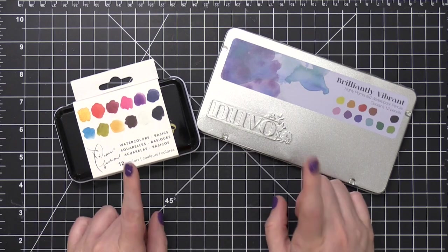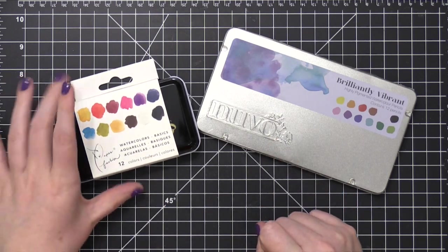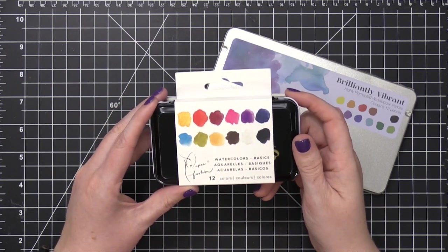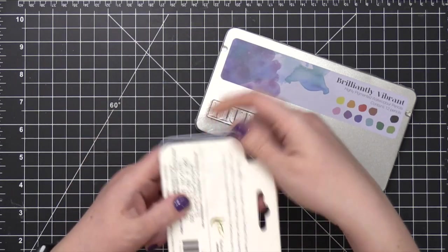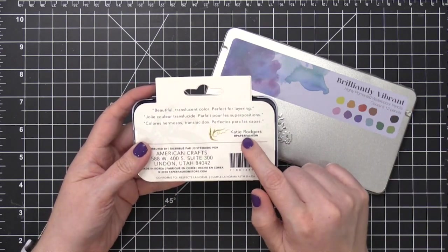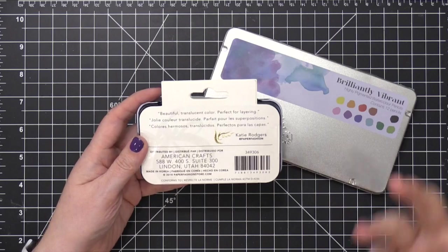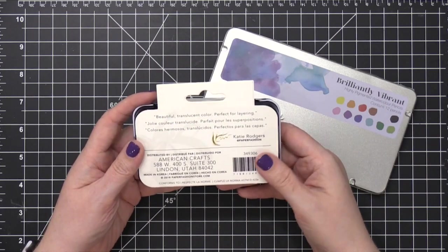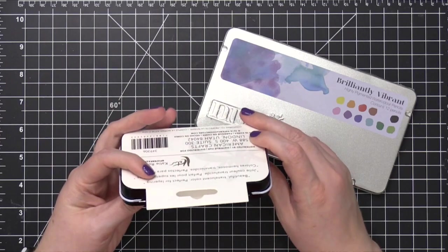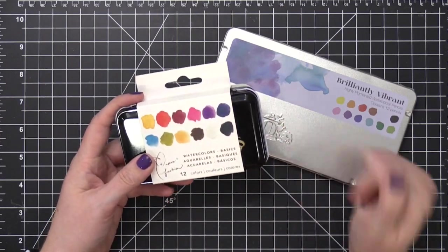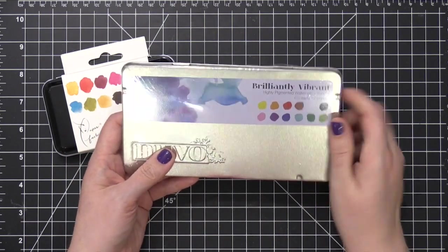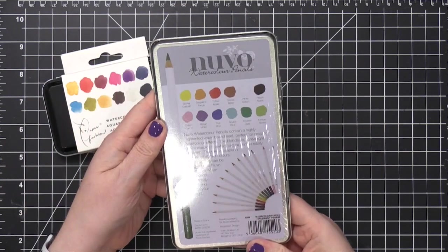I'm gonna be testing out two different types of watercolor mediums today. The first is the new Paper Fashion Watercolor Basic Set from American Crafts. And this is in conjunction with Katie Rogers, who is Paper Fashion on Instagram. So I have high hopes that this is gonna be a good watercolor set. It looks suspiciously like the Prima sets but we're gonna open up and find out. And then I also have the Nuvo Watercolor Pencils. I don't know if these are new or not, they're new to me.